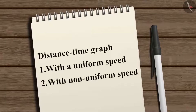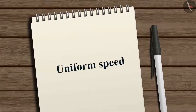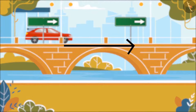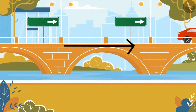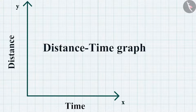Distance-time graphs can be made by considering two situations: either the object moves with a uniform speed or with non-uniform speed. First, we will consider the case of uniform speed. If an object is moving with a uniform speed, we know that it covers equal distances in equal time intervals. We can say that the distance is directly proportional to the time taken. So, let's start by plotting the graph.